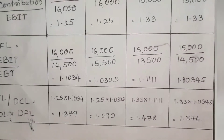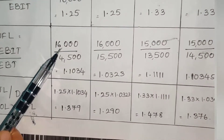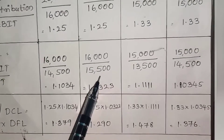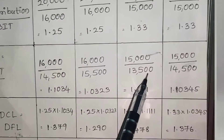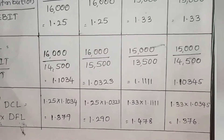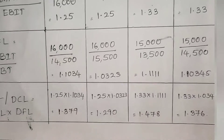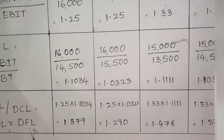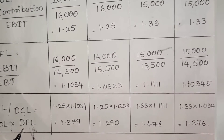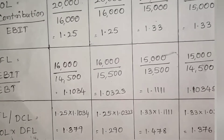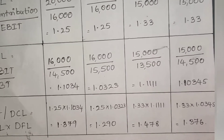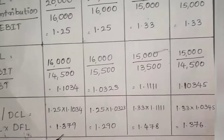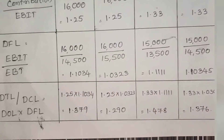For financial leverage, interest impacts the EBIT values differently across plans. EBIT is ₹16,000 and EBT is ₹14,500 for plan A situation 1; EBIT ₹16,000 and EBT ₹15,500 for plan B situation 1; EBIT ₹15,000 and EBT ₹13,500 and ₹14,500 respectively for situation 2. After calculating degree of financial leverage, total or combined leverage is degree of operating leverage multiplied by degree of financial leverage, or contribution divided by EBT. The combined leverage values are 1.379, 1.290, 1.478 and 1.376 respectively.